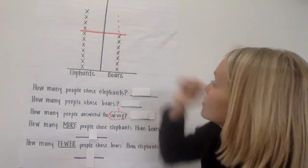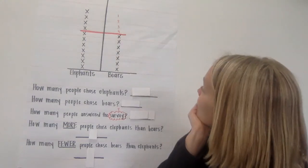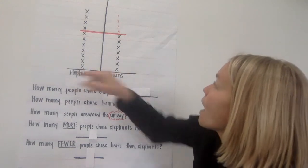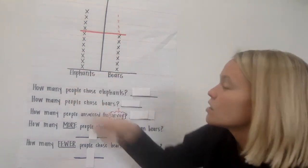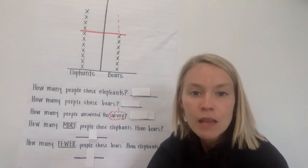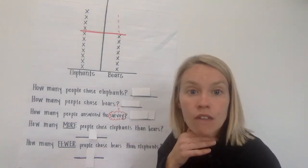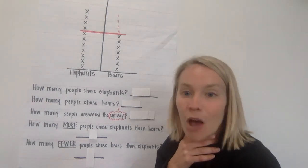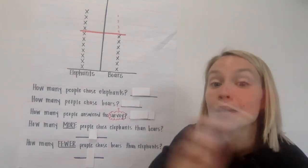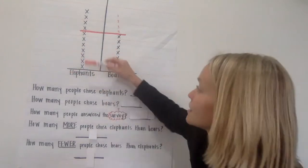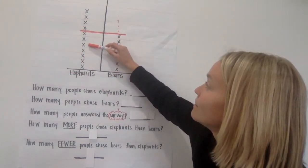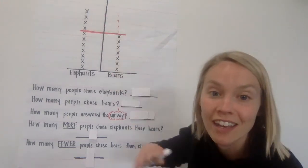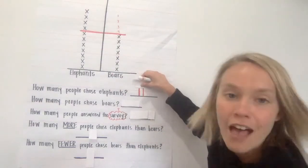It looks like fewer people liked bears than elephants. Let's look at our first question: how many people chose elephants? I'll give you a minute to count. Let's count together — one, two, three, four, five, six, seven, eight, nine, ten, eleven. Eleven friends chose elephants!